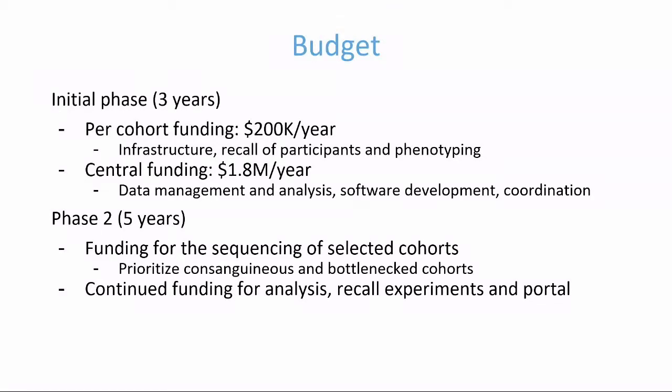In terms of the overall budget, we envisage an initial phase of three years. The budget would involve $1.8 million in central funding to handle data management and analysis, including joint calling and harmonising sequence data, software development for the portal, and coordination of recall studies, plus per-cohort funding to support recontact costs. A potential second phase, if the first is successful, would include funding for sequencing of selected cohorts, continued analysis, recall experiments, and continued portal development.